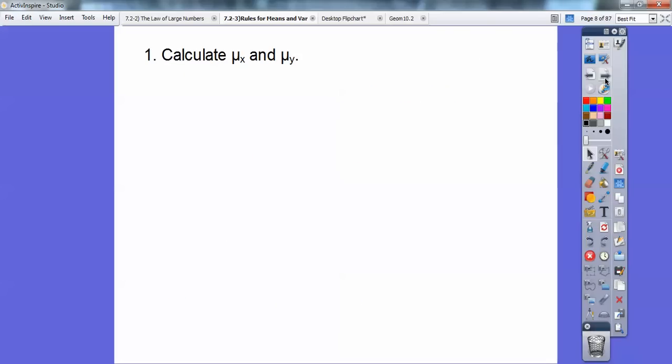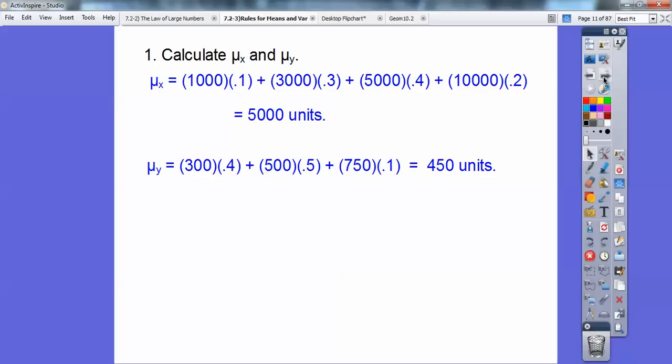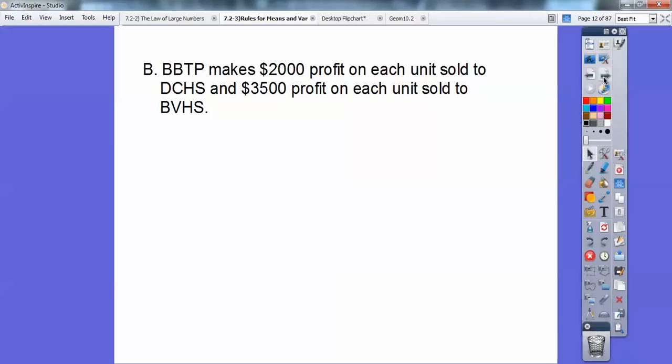And so we're going to calculate the mean of the x and the mean of the y. Remember the mean of the x, you just multiply the number times its probability on the individual probabilities, and those add up to 5,000 units. So the mean of the y, this is to the BBHS, you get 450 units.